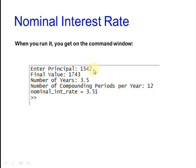When you run the function, you get this on the command window. You enter the principal, the final value, the number of years, the number of compounding periods per year. And the nominal interest rate is given by the function, in this case 3.51%.